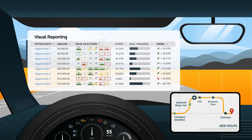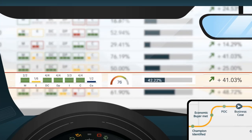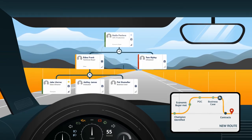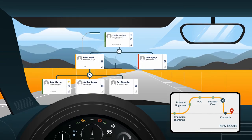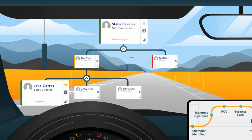Traffic color coding helps you and your managers identify problem areas and immediately take corrective action. iSeeIt's org chart tool maps out buying centers and tags champions and economic buyers who influence close.